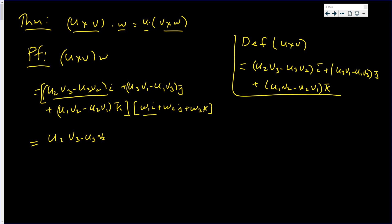times w1, plus the j components u3 v1 minus u1 v3, plus u1 v2 minus u2 v1 times w3.